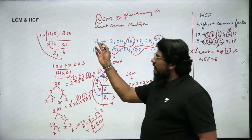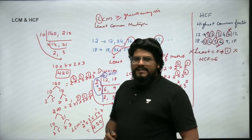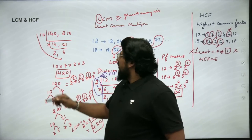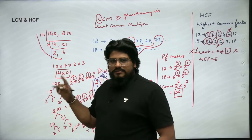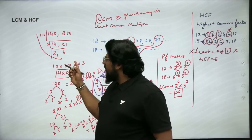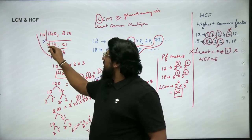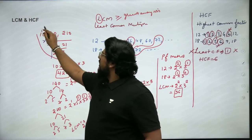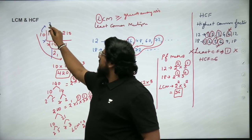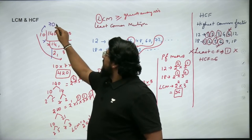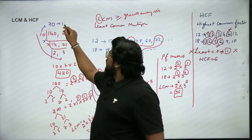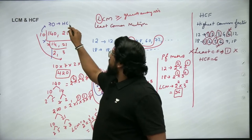For 140 and 210, what is HCF? Using the division method, we stop once the common divisors are exhausted. The common divisors were 10 and 7. So HCF = 10 × 7 = 70.